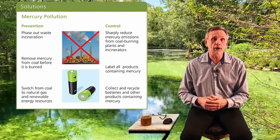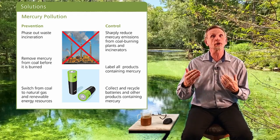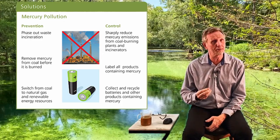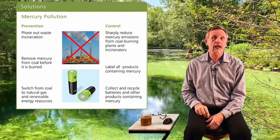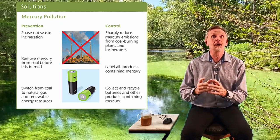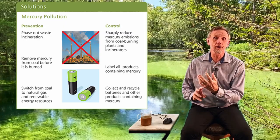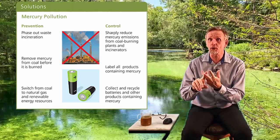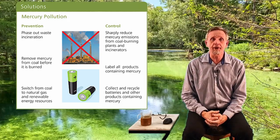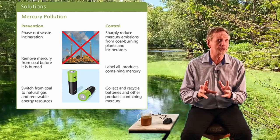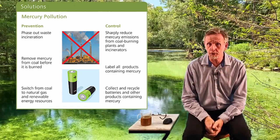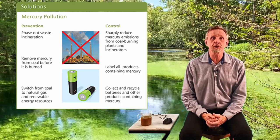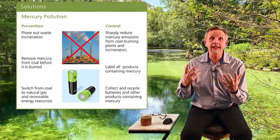We want to remove mercury from coal before it's burned. Coal is one of our dirtiest fossil fuels, and we need to minimize it as much as possible — though it's cheap energy with many systems in place. We need to process the mercury out prior to burning, because once we burn it, we release it into the air. As much as possible, we want to switch from coal to natural gas, and ultimately move away from fossil fuels into renewable energy sources, since fossil fuels just put toxins in the air.